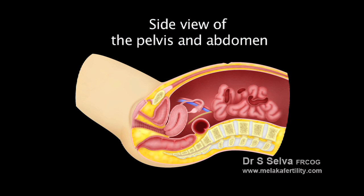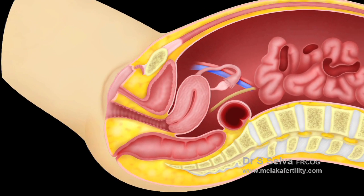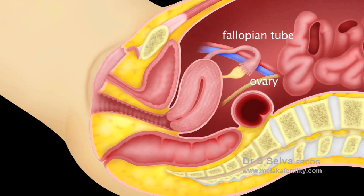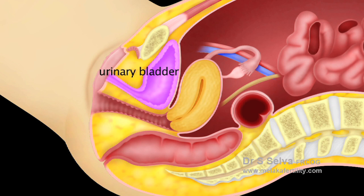This is the side view of the pelvis and abdomen. The uterus is in the center. On the side and behind the uterus are the fallopian tubes and the ovaries. In front of the uterus is the urinary bladder and behind it is the rectum.